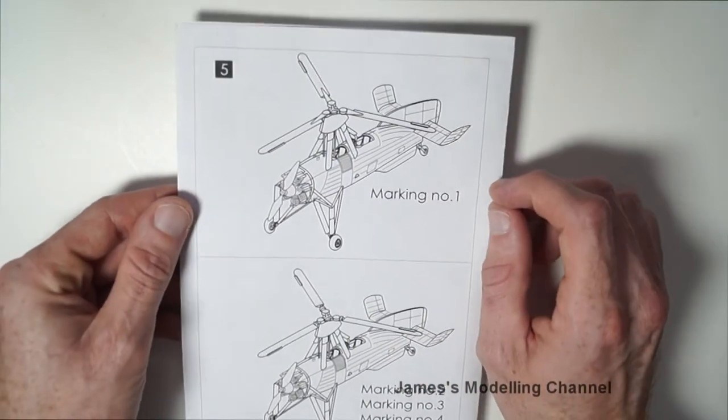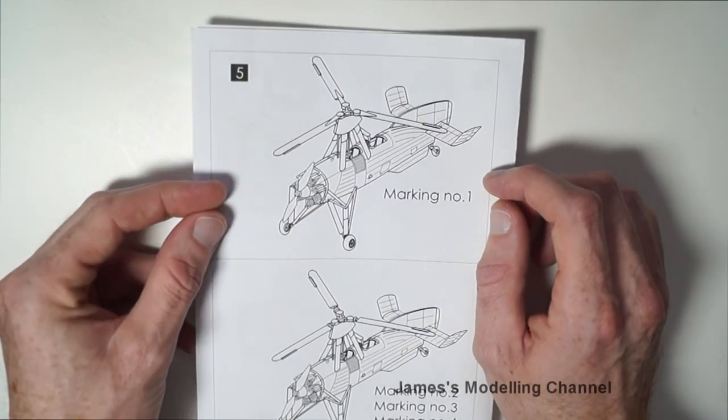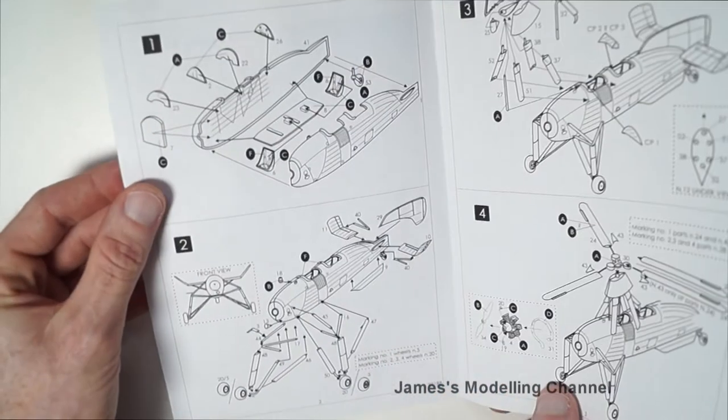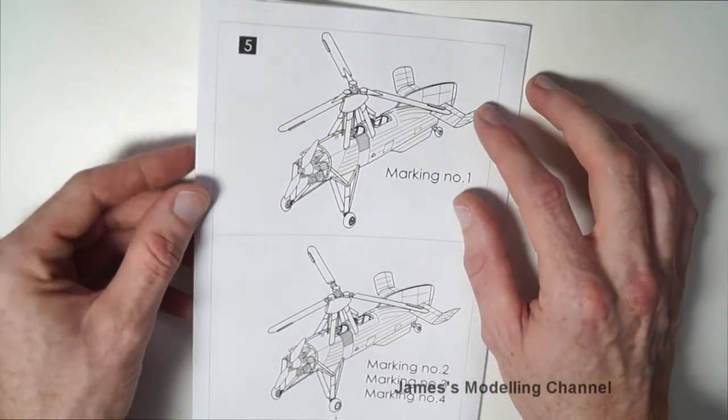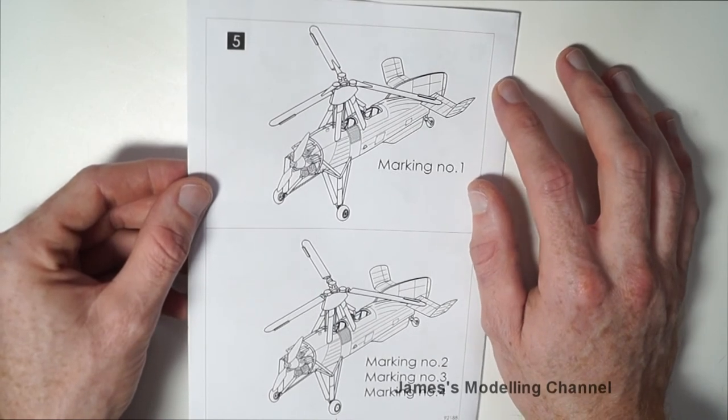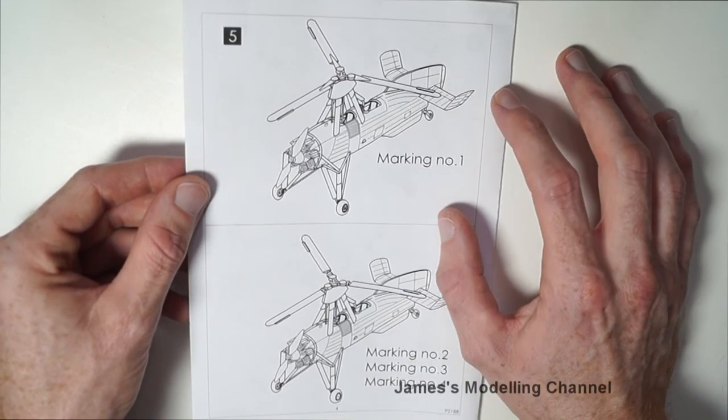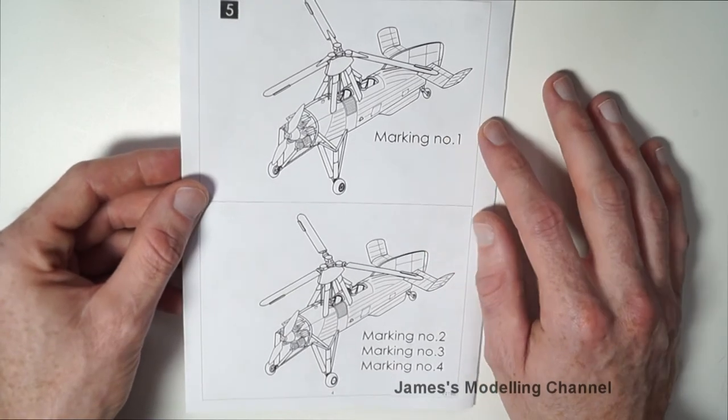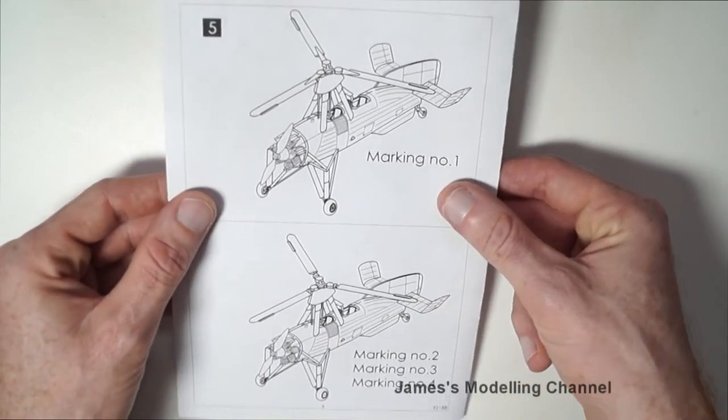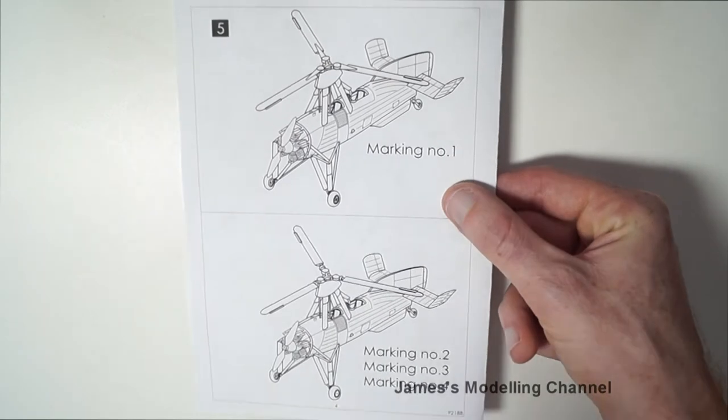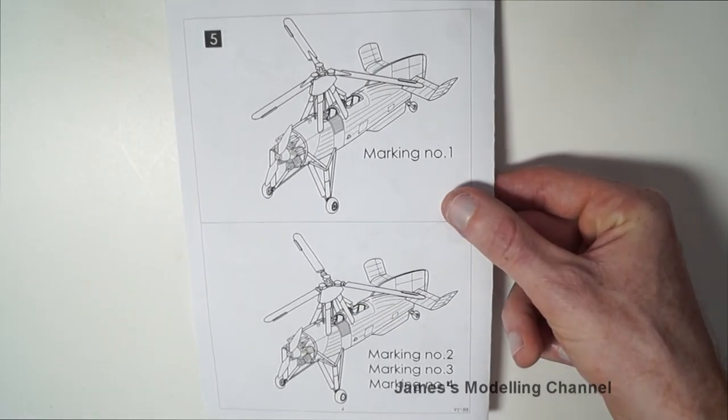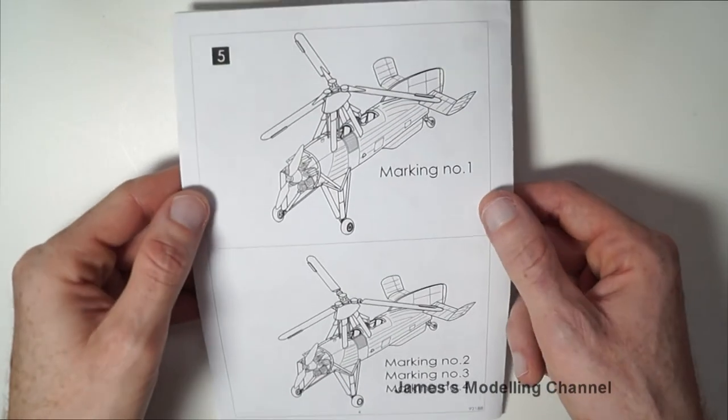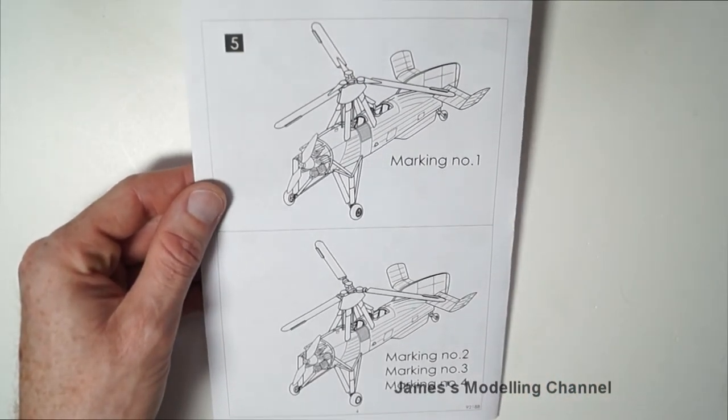Over the page to the last section. So there's only four build steps. Step five is the same markings, but there are no markings, just the illustration of the aircraft. The color guide and the decal guide is actually on the box.